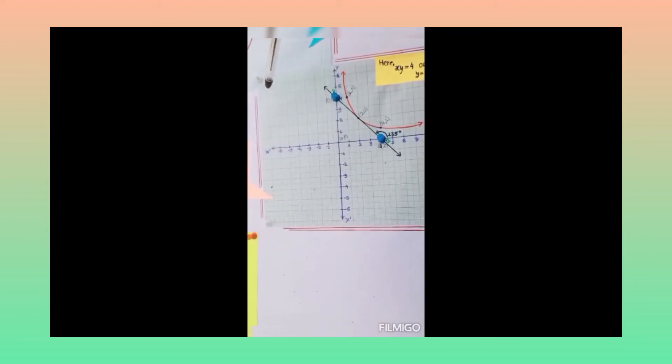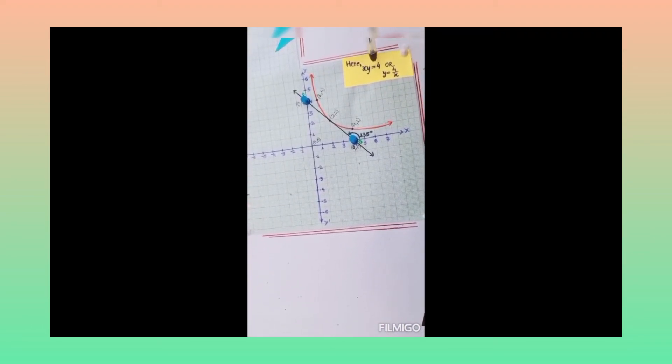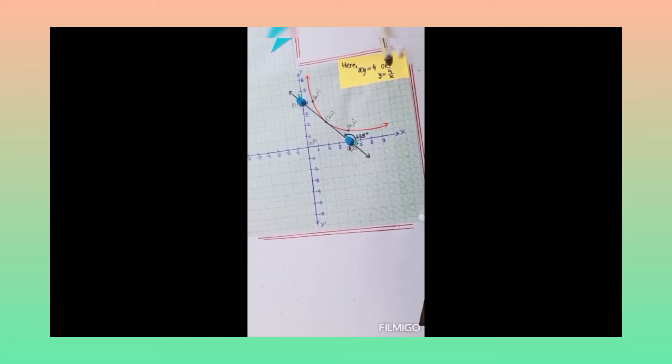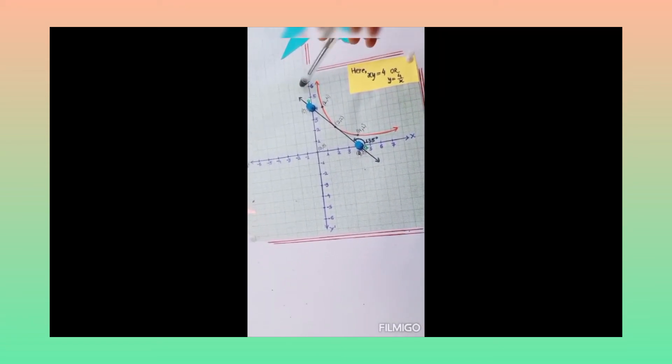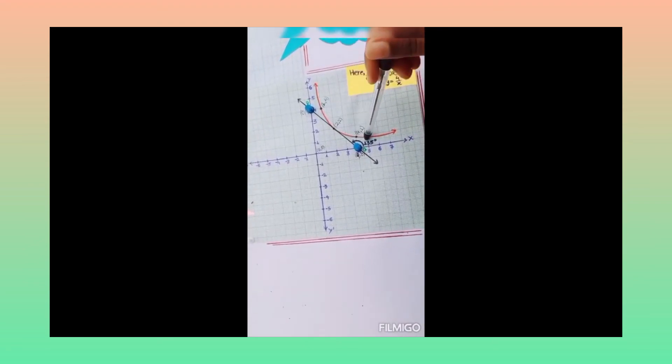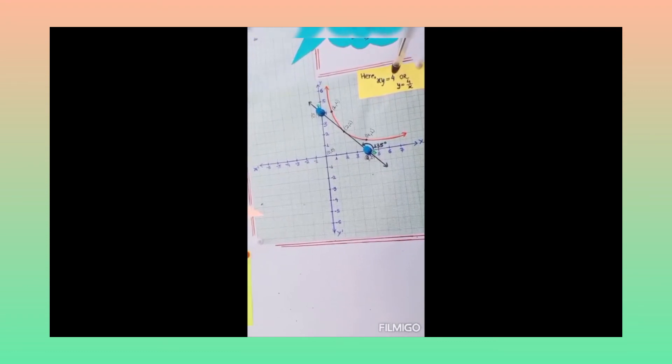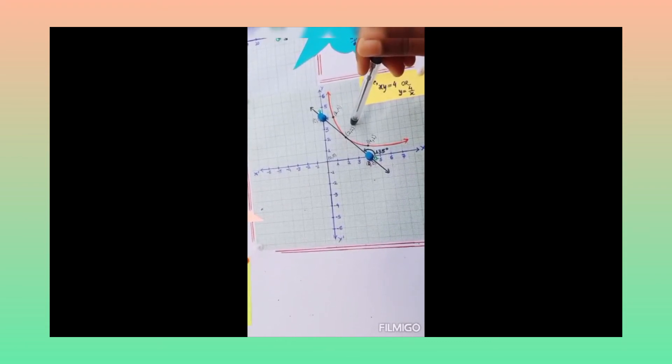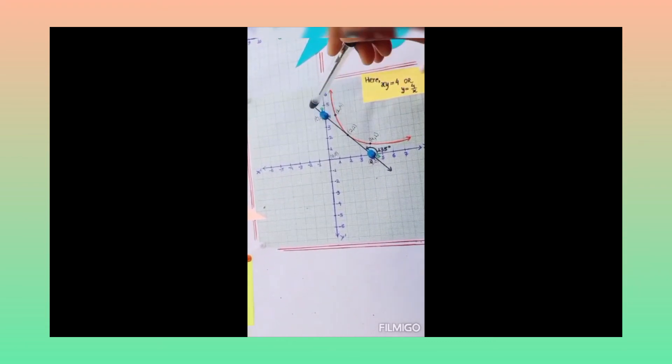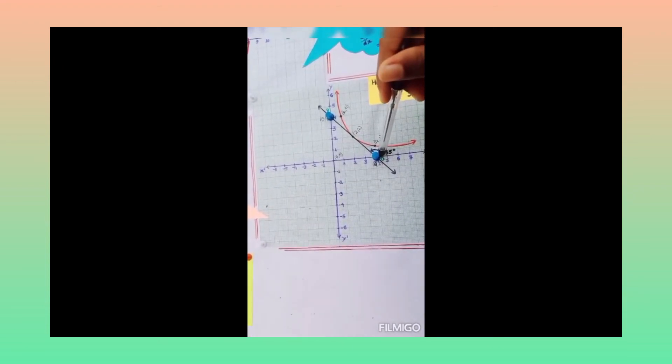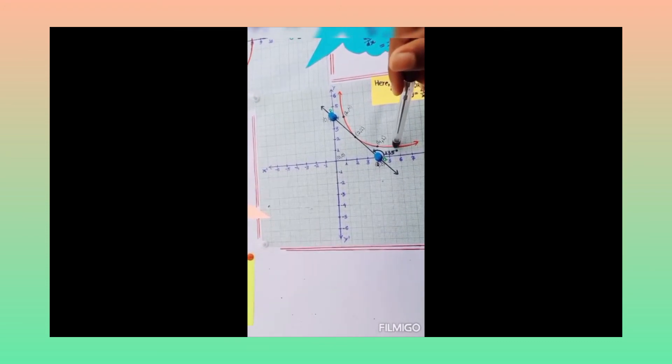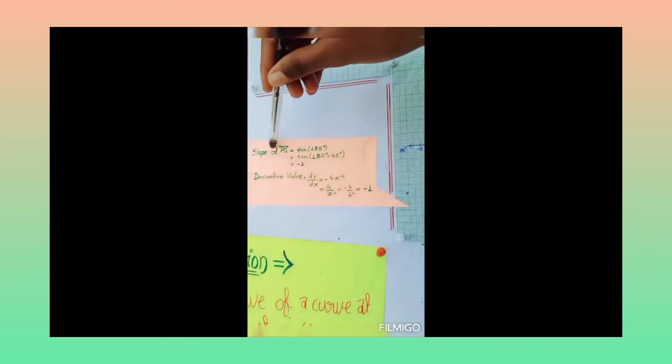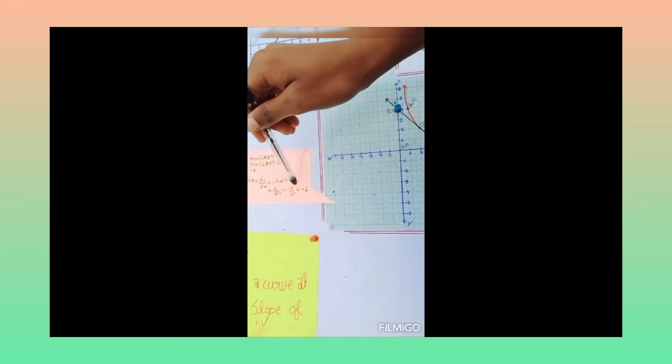By taking third graph, the equation is xy is equal to 4, or y is equal to 4 upon x. So this curve satisfies this equation and we take point 2,2. By taking 2,2, we draw tangent. Then the angle of inclination is 135 degrees. So in this graph, the slope of PQ is equal to minus 1 and derivative value is also minus 1.